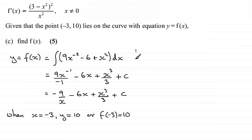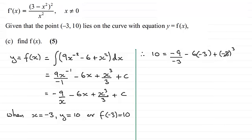And so, it's just a question now of substituting these values into our equation here to work out what c is. So what we would therefore have is that 10, for y, would equal -9 divided by our value of x, which is now -3, so we've got -9 divided by -3. And then, -6 times x, that's -6 times -3. And then, plus x³/3, so that's plus (-3)³ over 3, and then plus the constant of integration, c.